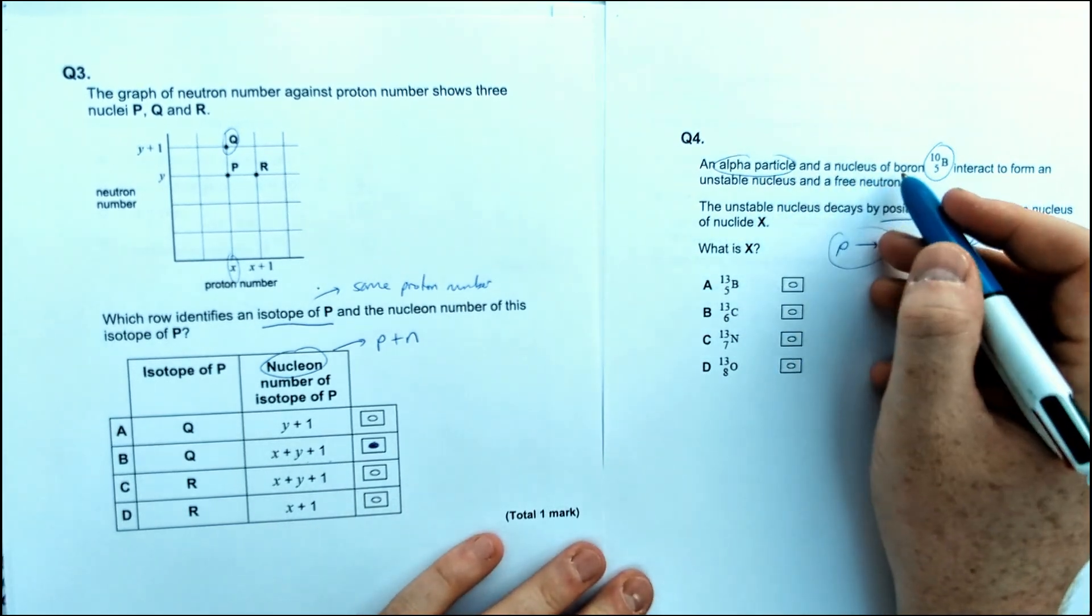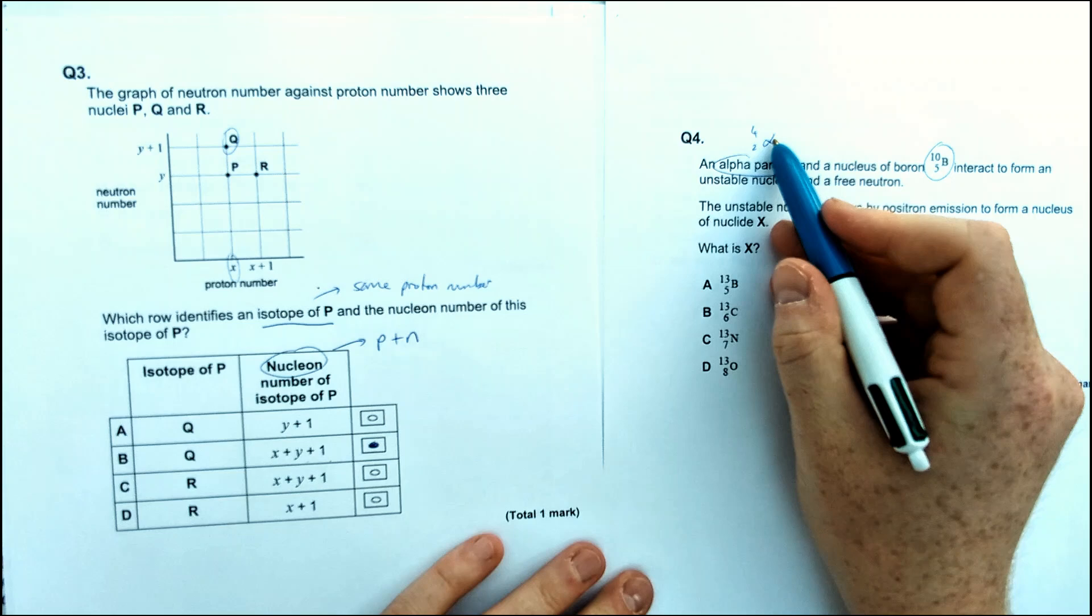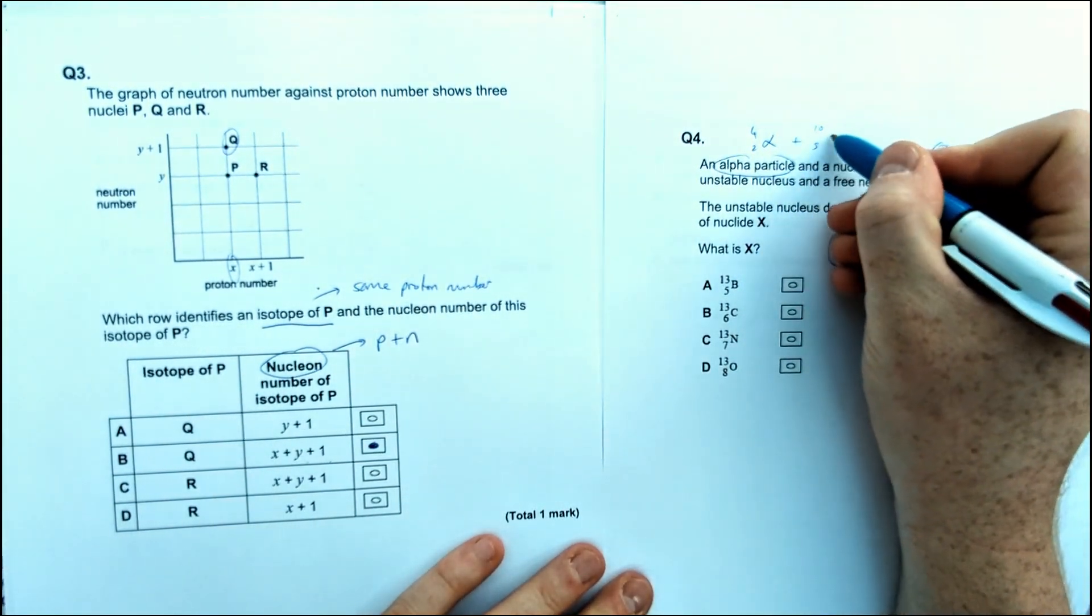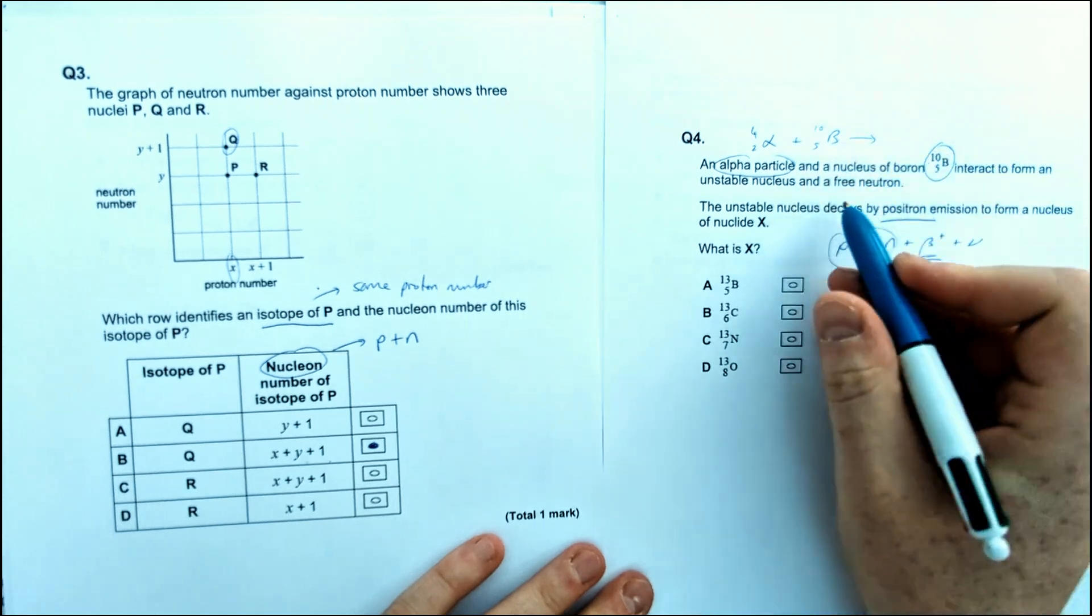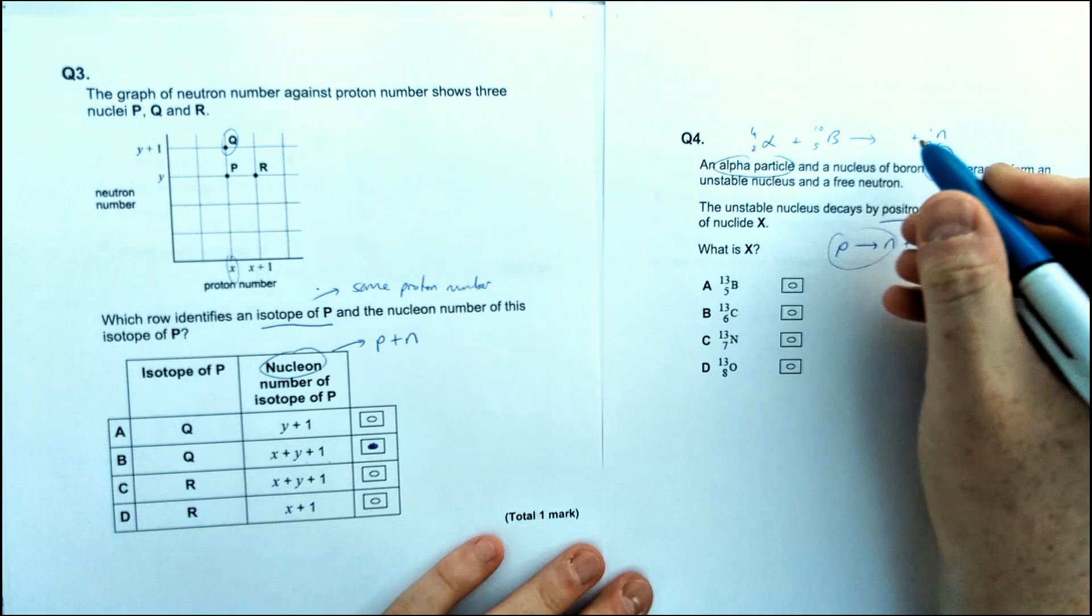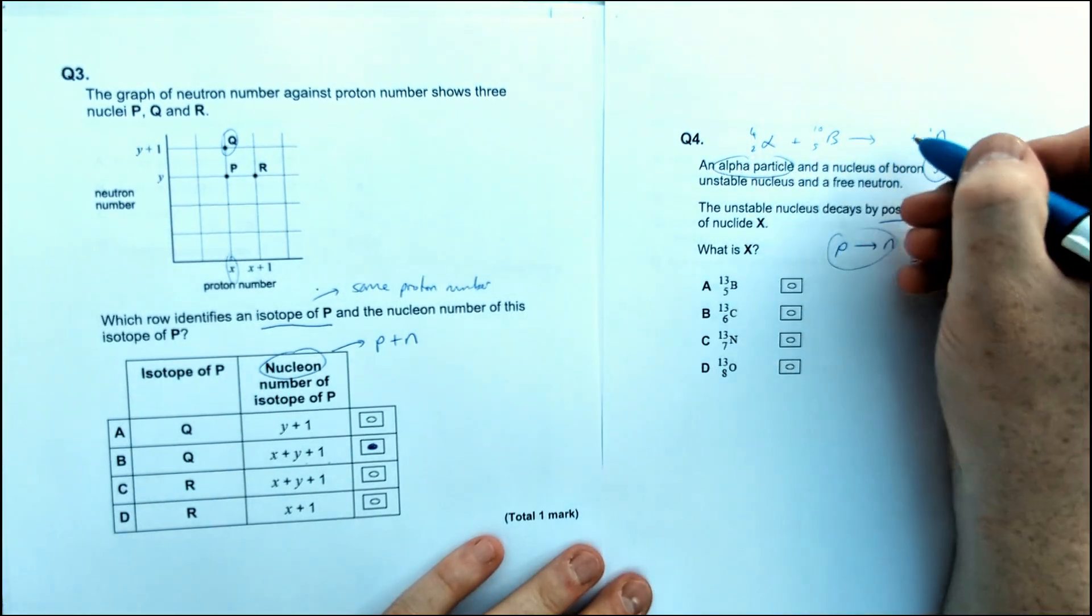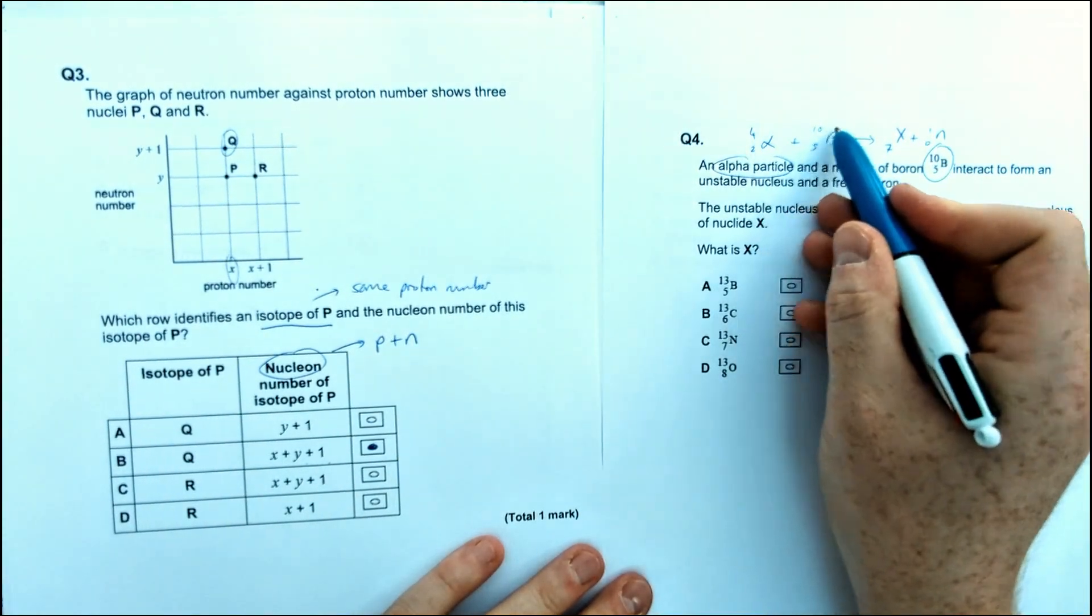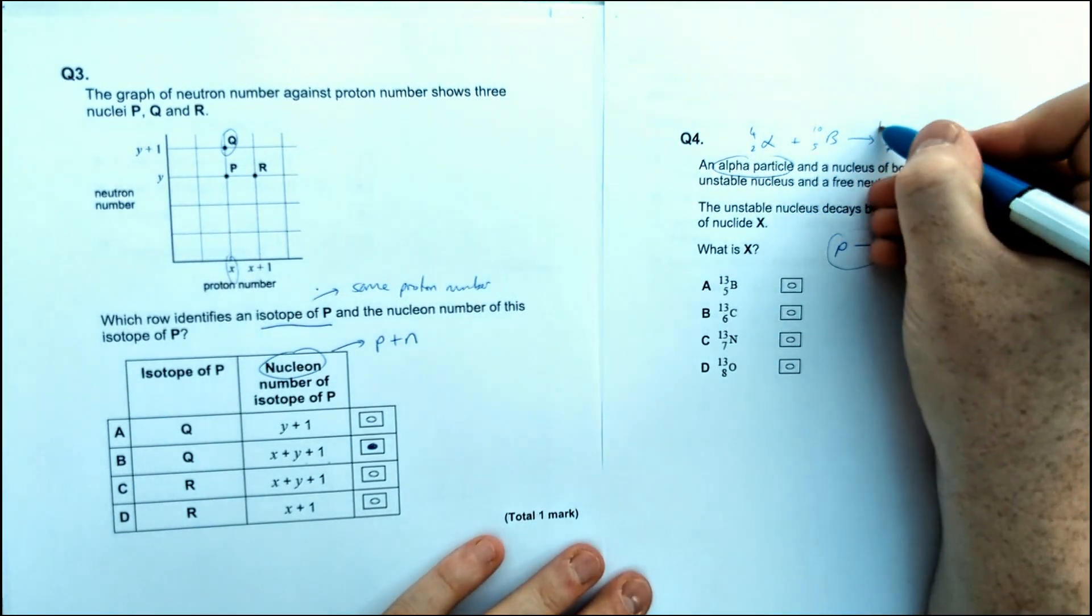So you have to figure out what these two form together first. So an alpha particle, we've got 2 and 4 as the proton and nuclear numbers, plus our boron with 5 and 10. And then it said that makes a free neutron. So we've got something that makes something plus a neutron. So adding everything together, at the bottom, we're going to have 7 into a mystery element X. And 4 and 10 minus the one we've lost to the neutron gives us 13.